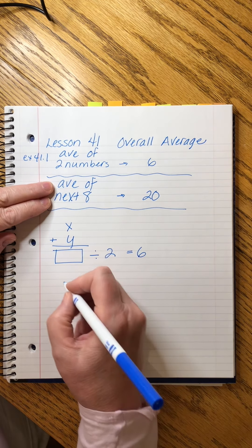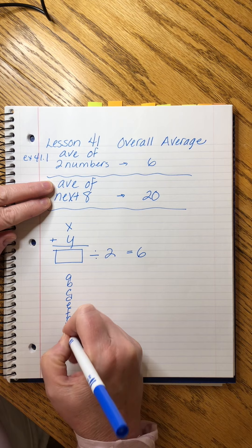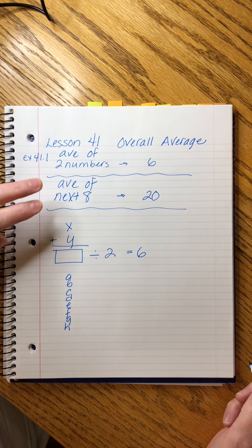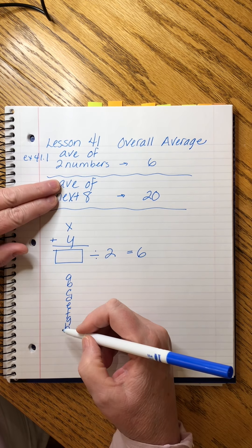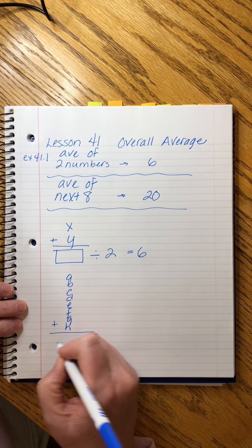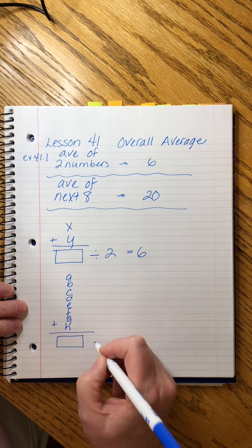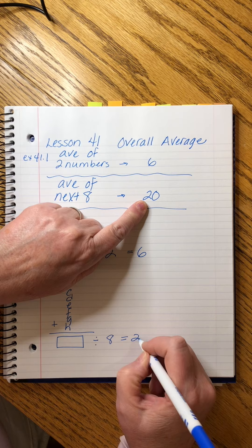Now we added up eight numbers — A, B, C, D, E, F, G, and H. That's eight letters. We're just letting the letters substitute for the numbers because we don't know the numbers. We added them all up, we got a total, we divided by eight, and that average was 20.